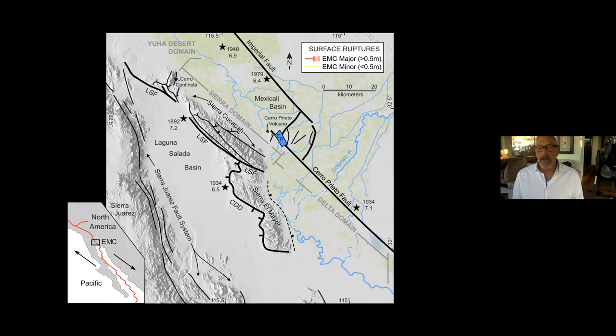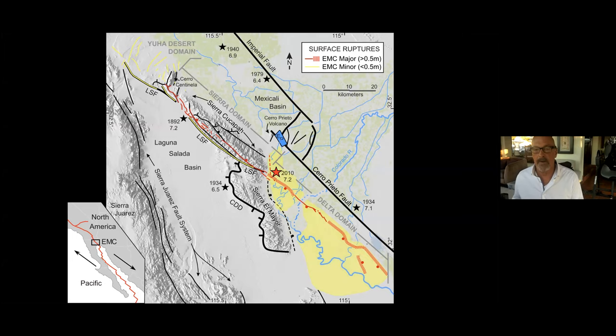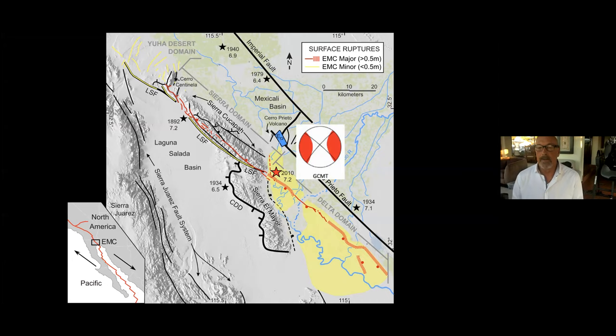The El Mayor Cucapah earthquake produced one of the most complex surface ruptures ever recorded on the Pacific–North American plate margin. It started on a north-striking normal fault and propagated bilaterally across the Colorado River Delta and through the Sierra Cucapah. Notice the change in polarity of tectonic transport from west-directed in the delta domain to east-directed in the Sierra domain. The centroid moment tensor is strongly non-double-couple, and neither nodal plane corresponds to any of the faults activated; rather, it gives a blurry representation of all the faults that ruptured together.